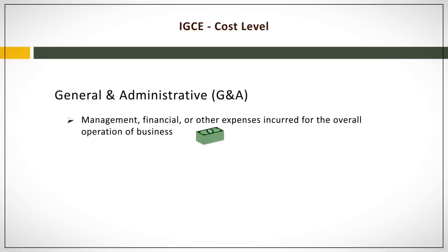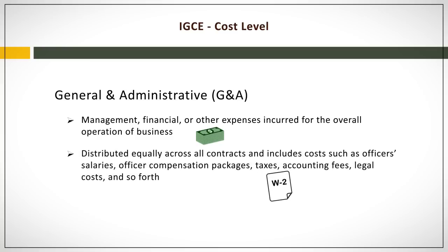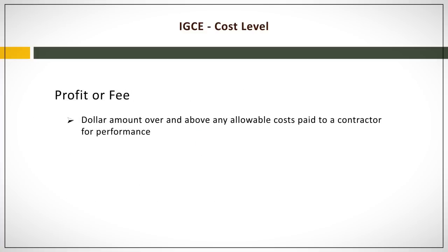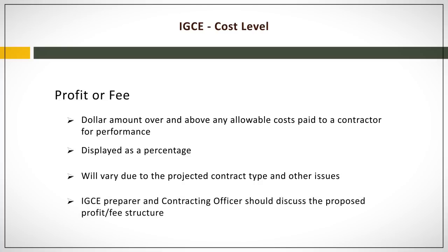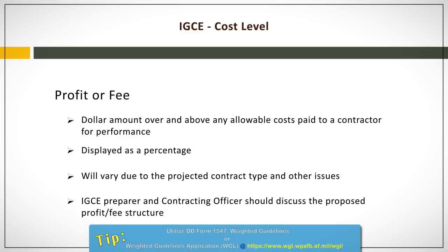General and administrative, or G&A, costs are any management, financial, or other expenses incurred for the overall operation of a business. These costs are distributed equally across all contracts and include costs such as officers' salaries, officer compensation packages, taxes, accounting fees, legal costs, and so forth. G&A is typically expressed as a percentage of the total costs before profit or fee. Finally, profit or fee is the dollar amount over and above any allowable costs paid to a contractor for performance. The profit or fee percentage will vary due to the projected contract type and other issues, and the IGCE preparer and contracting officer should discuss the proposed profit/fee structure.